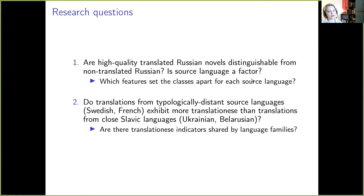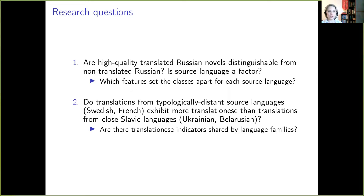In brief, this research pursues two major goals. First, we are testing whether literary translations into Russian are indeed distinguishable from non-translated Russian for all source languages involved. Second, we are testing the hypothesis that translations from typologically distant source languages, with regard to the target language, exhibit more translationese than translations from close languages. This regularity was observed in previous research based on other language pairs and in other registers. In both directions of study, we pay special attention to translationese indicator features that capture the distinctions between the respective text categories.